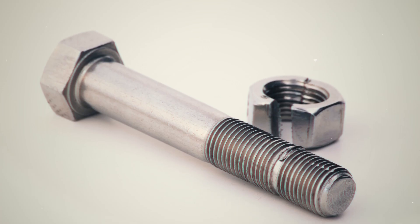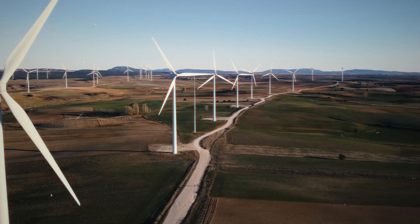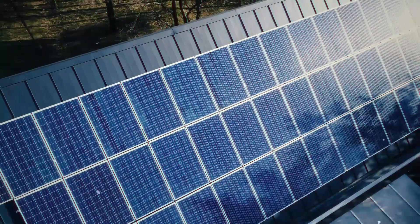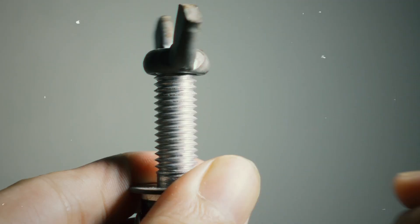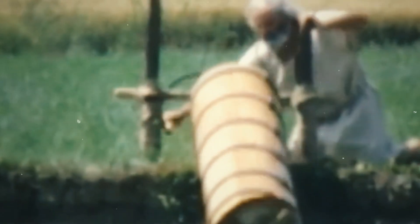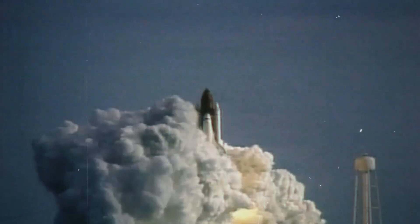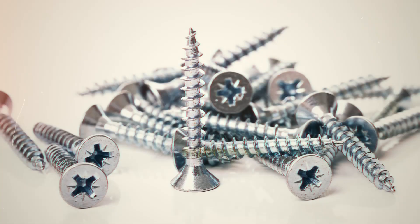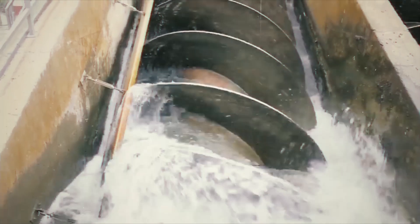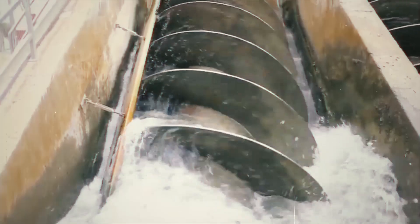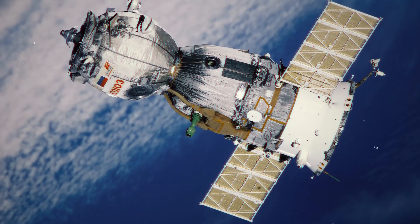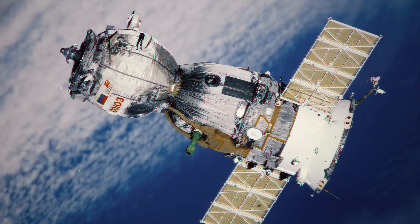In renewable energy, specially designed screws ensure the stability of wind and solar installations, proving that even the smallest details can shape our future. It's amazing to think that Archimedes' old ideas now help rockets stay together during liftoff. These are screws with superpowers. It's just wild to think that something first used to lift water is now holding together some of the most complex machines we've ever built.